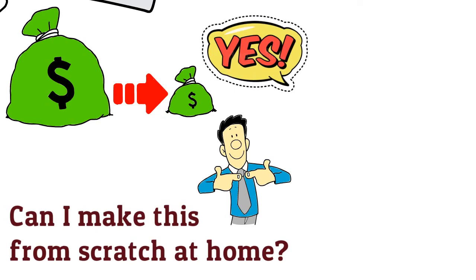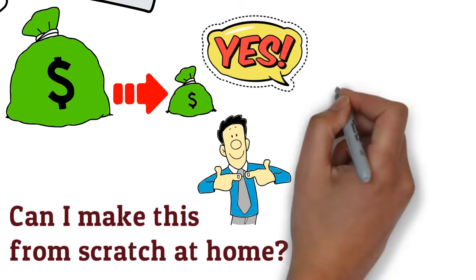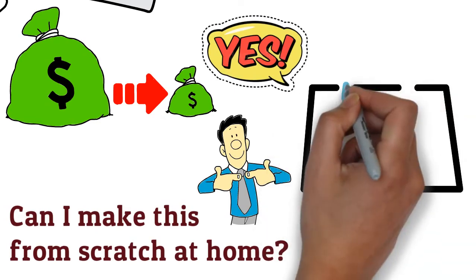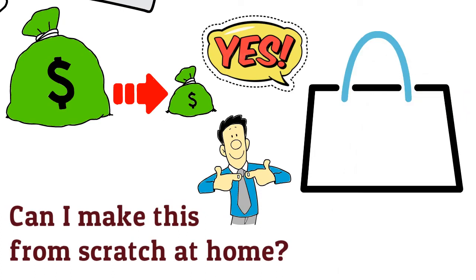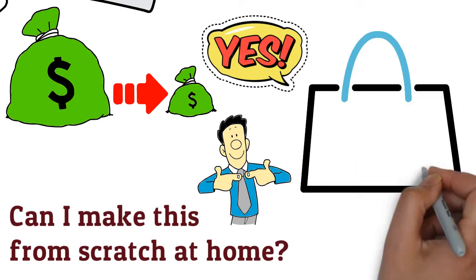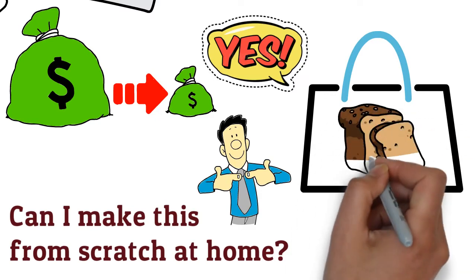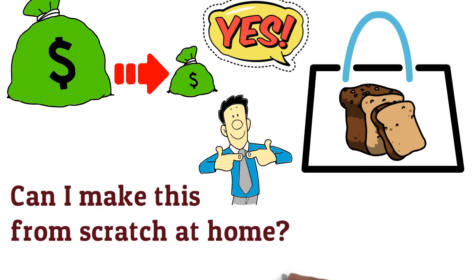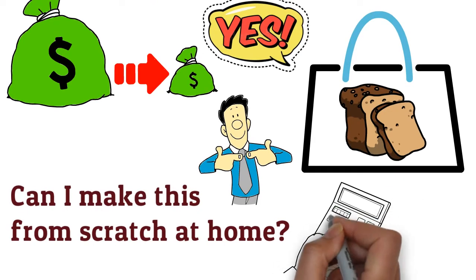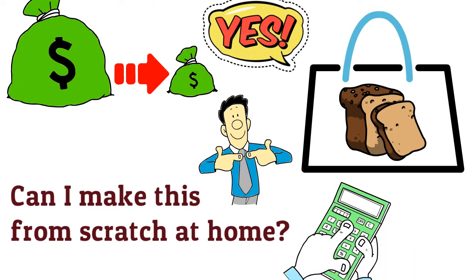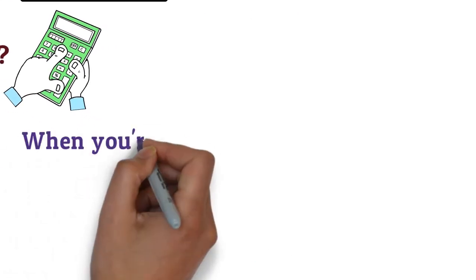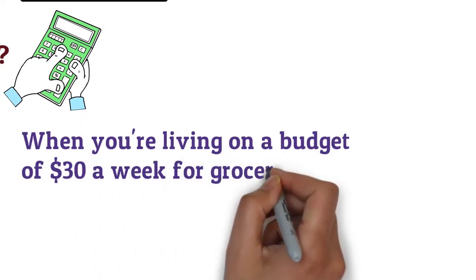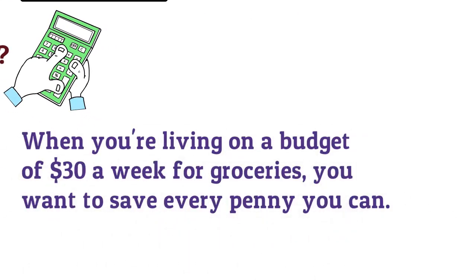And sometimes there will be the rare occasion when buying it already made at the store might actually be cheaper. For example, sometimes you can buy a loaf of bread cheaper than you can make it. So just go with your own judgment here and use common sense. I know it might be kind of nerdy, but you can always pull out your calculator and run some numbers to figure out what the cheapest option would be. When you're living on a budget of $30 a week for groceries, you want to save every penny you can.